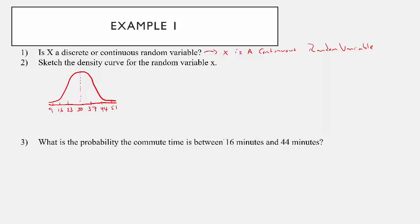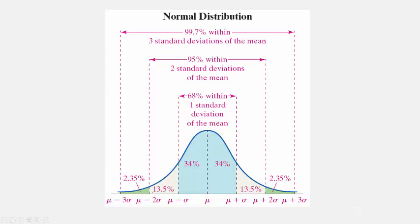The question is: what is the probability that the commute time is between 16 and 44 minutes? Looking at the density curve, here's 16 and here's 44 — we want the area in between. That's within two standard deviations on each side, so by the empirical rule we know that probability is 0.95.